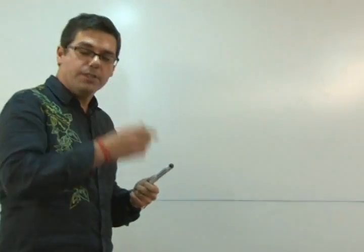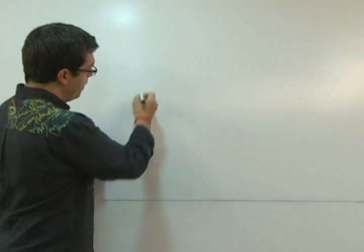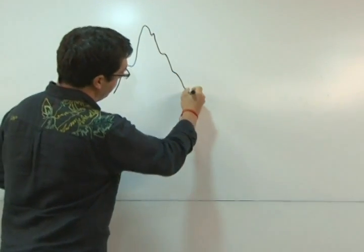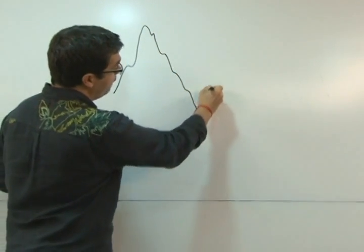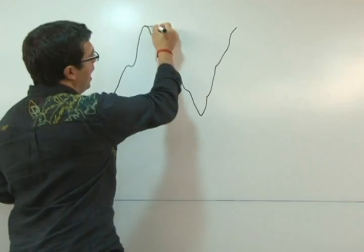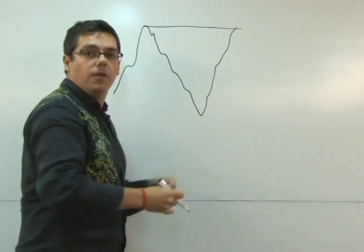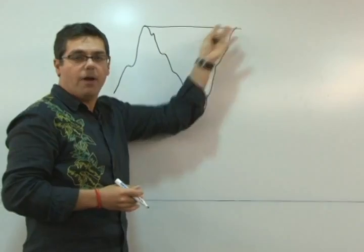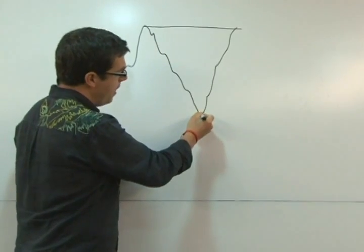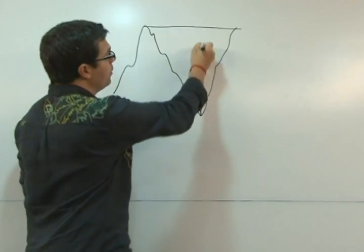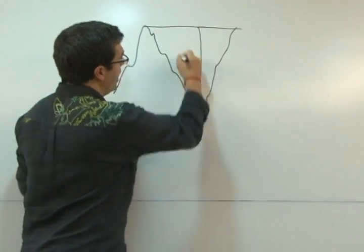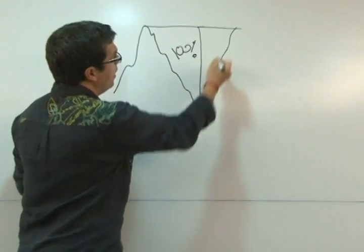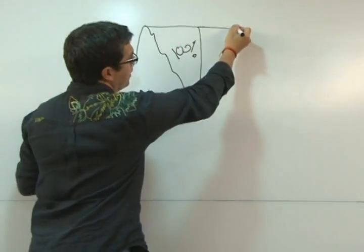Let's take an example. If price makes a move — say I have a pivot point, price sells off and then it runs up again. I have here what is called a supply level, so therefore I'm expecting a drop in price. I can simply measure the cycle distance, which is basically a 100% cycle between this low and that particular high.